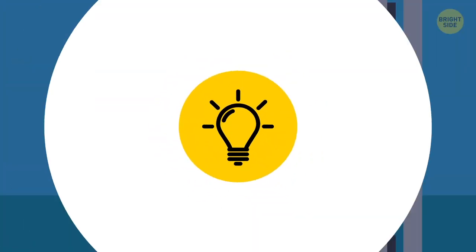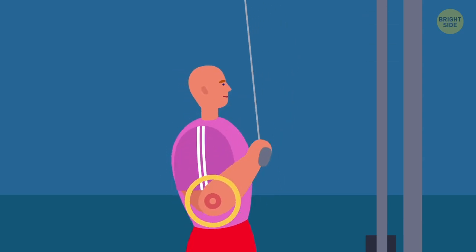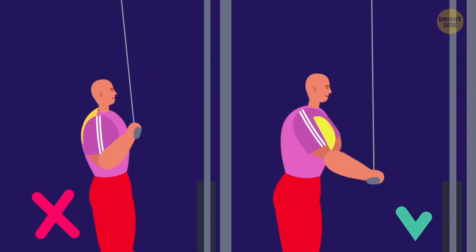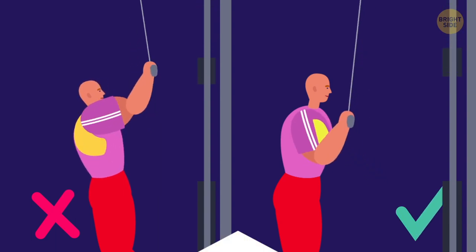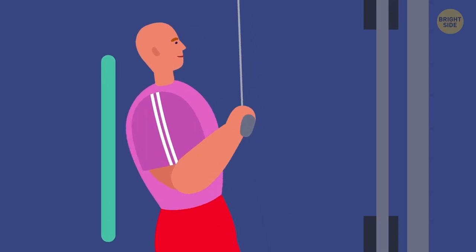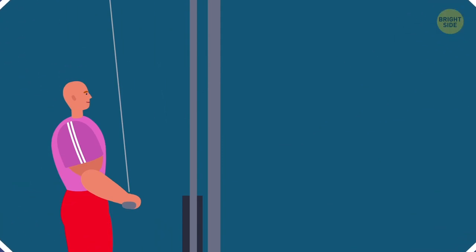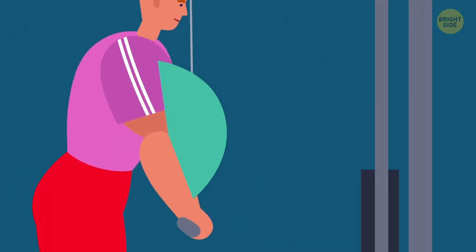When doing cable tricep extensions, some people don't lock their elbows. That's why their lats get engaged, and the exercise ends up being not so effective for the triceps. Another mistake you should steer clear of is keeping your body upright. This way, you don't get a full range of motion. Try bending a bit forward, it'll help target your biceps.